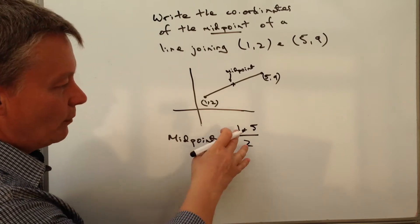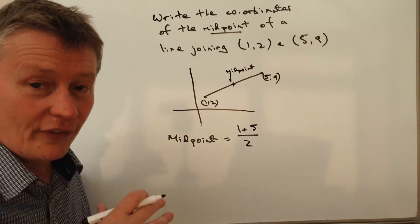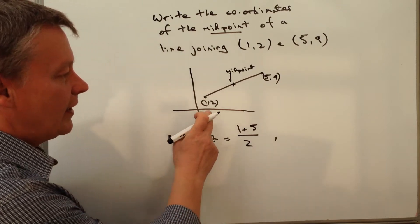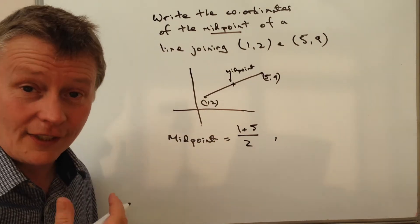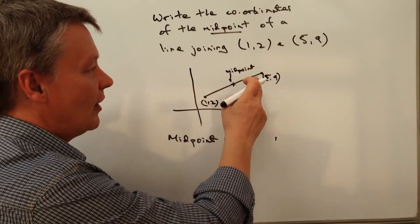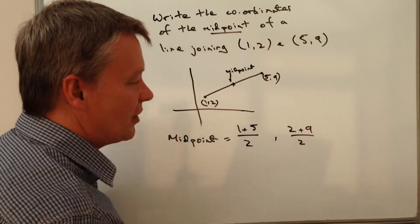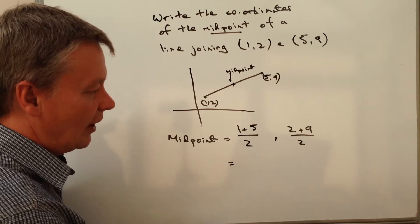So we've got (1+5)/2 for the x coordinate, and then for the y coordinate it's the same process: (2+9)/2. If I calculate those out...